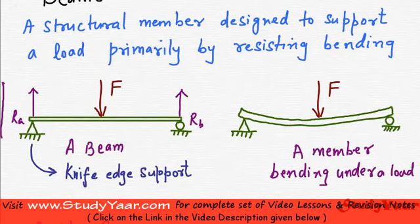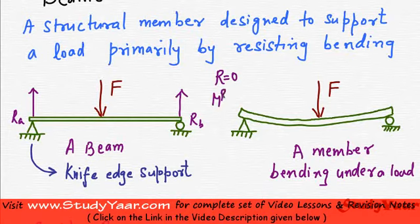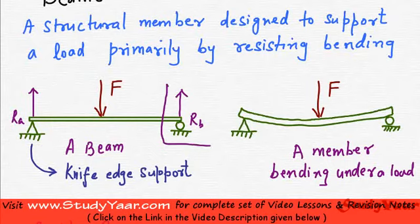In this beam I can find out these two reactions by solving my equation R is equal to 0 and Mr is equal to 0. Anywhere if you are given a question wherein you have a beam which is loaded by a force and you need to find out the supports, all you need to do is apply the equation R is equal to 0.